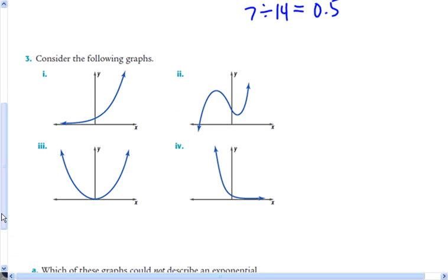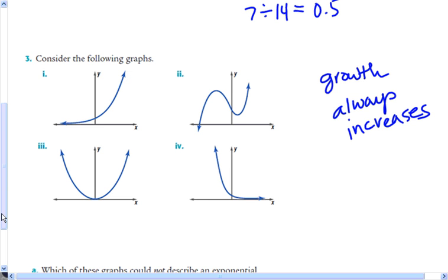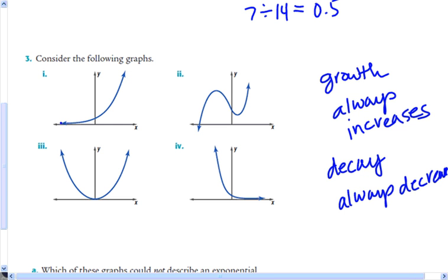Now we identify exponential relationships from graphs. Exponential growth always increases — the curve goes up and keeps getting steeper. Graph 1 keeps increasing from left to right, getting steeper and steeper, so that is exponential growth.